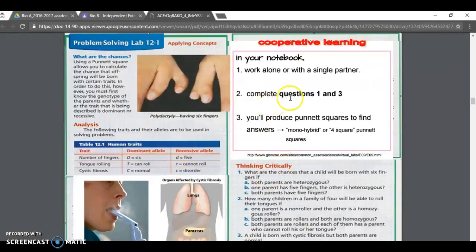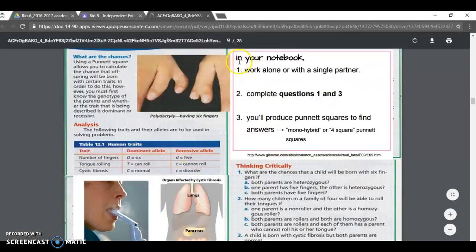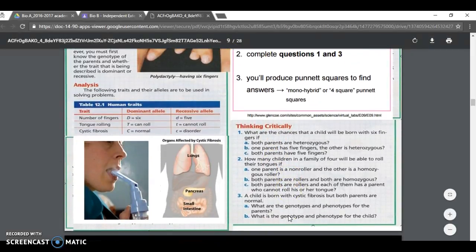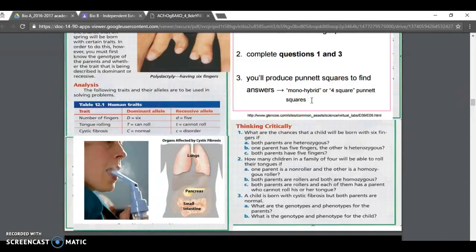You're going to use these alleles here and the codes, the D, T, or Cs, dominant or recessive, to answer questions one and three. So remember, it's in your notebook, questions one and three only, so you get to skip two. You're going to produce Punnett squares or a four box Punnett square.